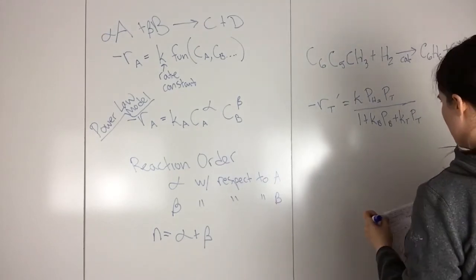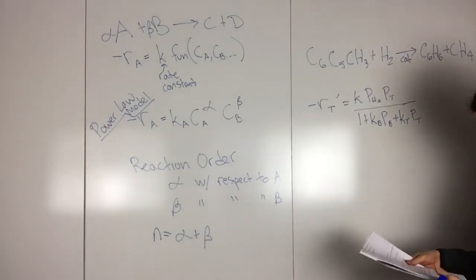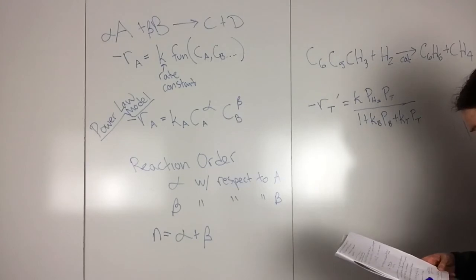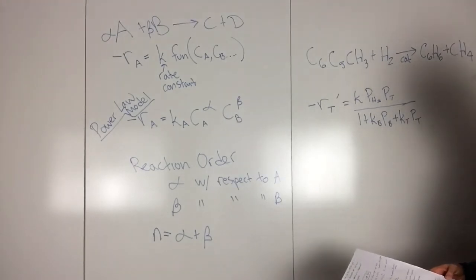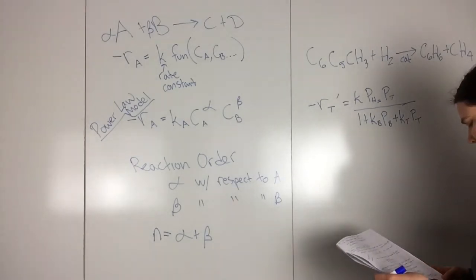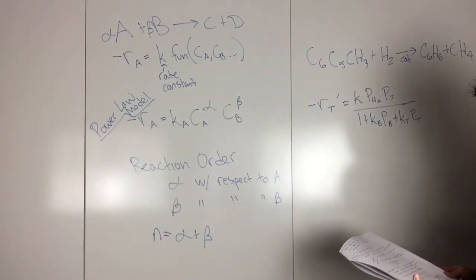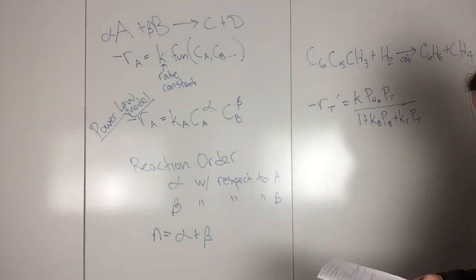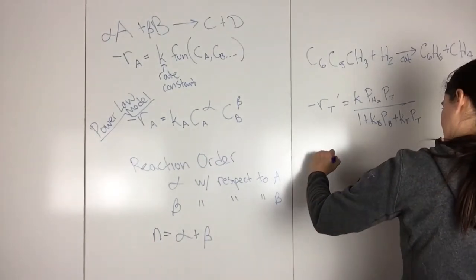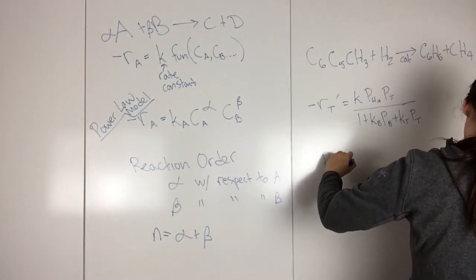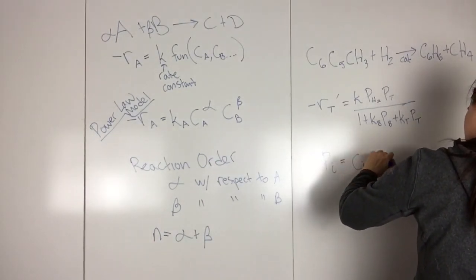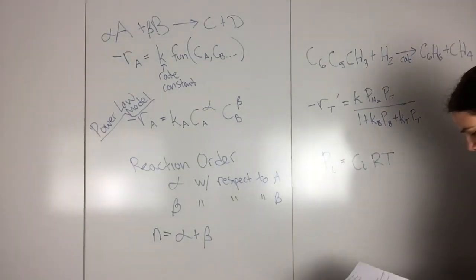And so in order to express the rate law in terms of concentration rather than partial pressure, then you can substitute partial pressure using the ideal gas law. So you would use PI equals CI times RT.